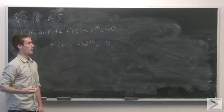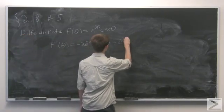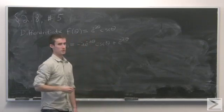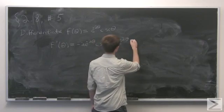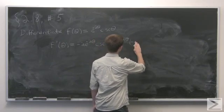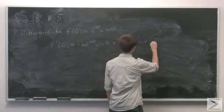And to that we're going to add the first part of the product times the derivative of the second part. The derivative of cosecant is negative cosecant theta times cotangent theta.